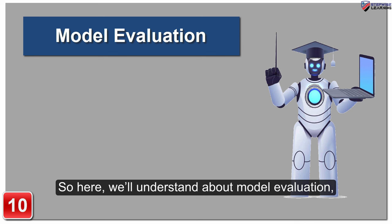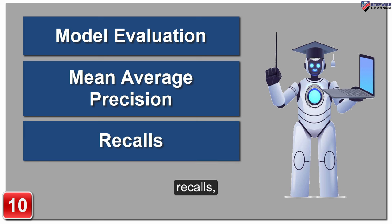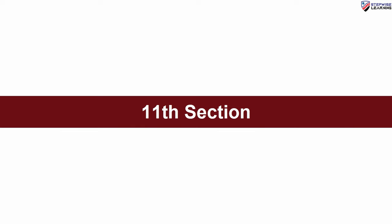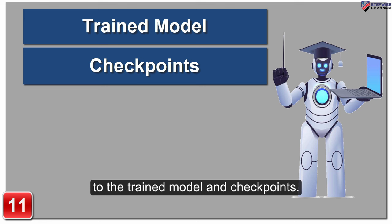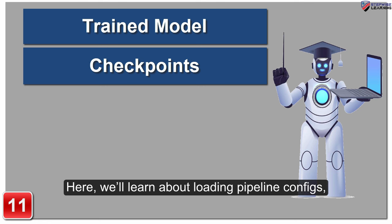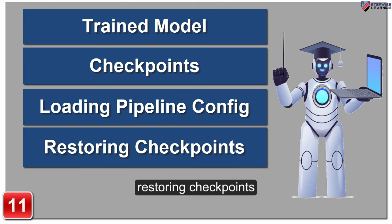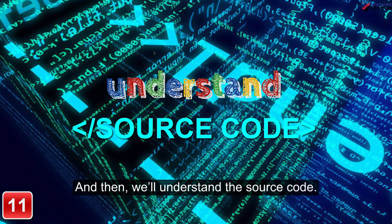After completion of training, the model evaluation step comes. Here, we will understand about model evaluation, mean average precision, recalls, confusion matrix and so on. The eleventh section will take you to the trained model and checkpoints. Here, we will learn about loading pipeline configs, restoring checkpoints and building a detection model, and then we will understand the source code.